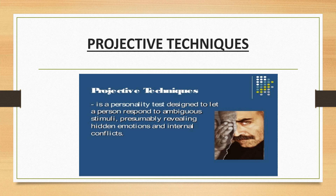The inventories discussed earlier are direct techniques of assessing personality because they rely on information directly obtained from the person, who clearly knows that his or her personality is being assessed. In this situation, people generally become self-conscious and hesitate to share their private feelings and thoughts. When they do share, they often do so in a socially desirable manner, which is again a limitation of self-report inventories.